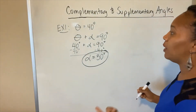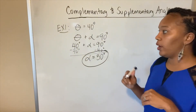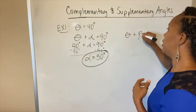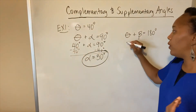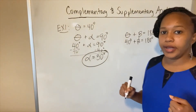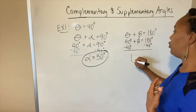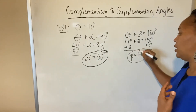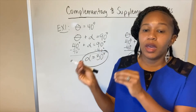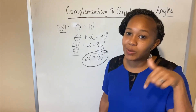Now we need to find the supplement of theta. Remember, the supplement means two angles add up to 180 degrees. So if theta is 40 and we add it to beta, it equals 180 degrees. We know theta is 40, so we need: 40 plus what gives me 180? To solve it, subtract 40 degrees from both sides, and that gives you beta equals 140 degrees. That's how you find the supplement of 40 degrees. So remember: complement — two angles add up to 90; supplement — two angles add up to 180 degrees.